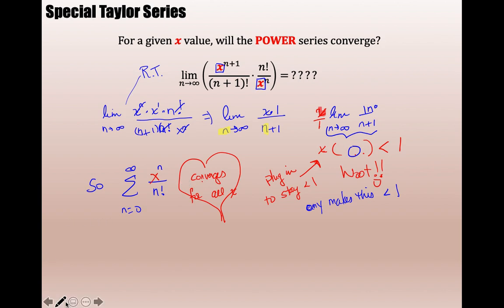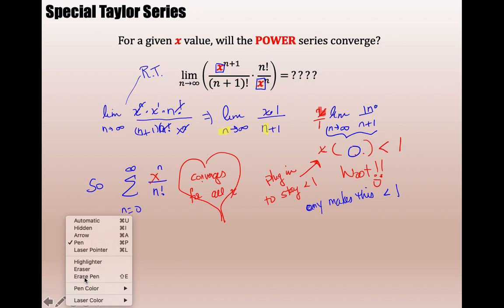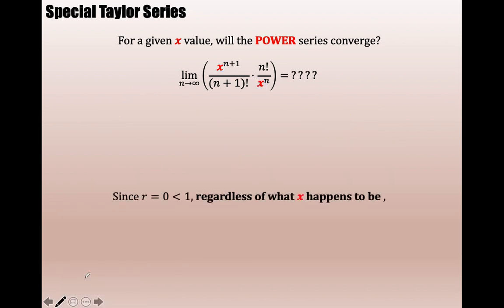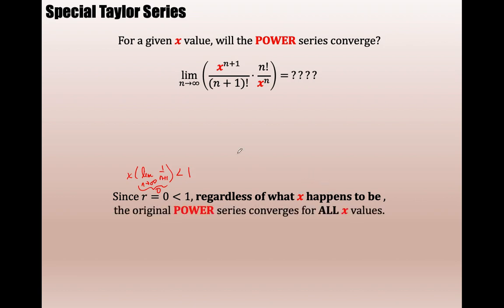Any series of this form — 2 to the n over n factorial, 3 to the n over n factorial, 10 to the n over n factorial — I don't have to run the ratio test. I have just proved that no matter what x you use, you will end up with a convergent series. Since that limit was always zero, and since x times zero is always less than 1 regardless of whatever x is, the original power series converges for all x.